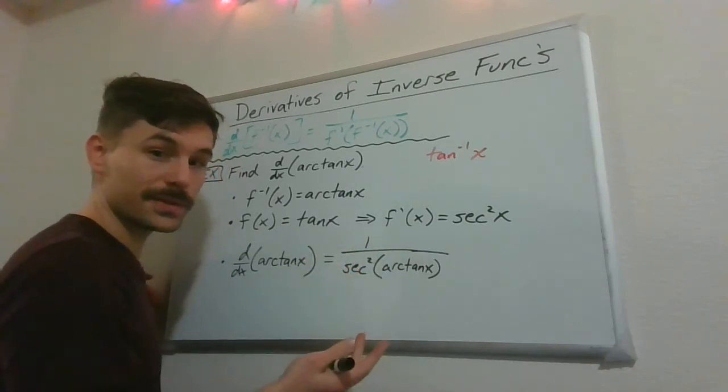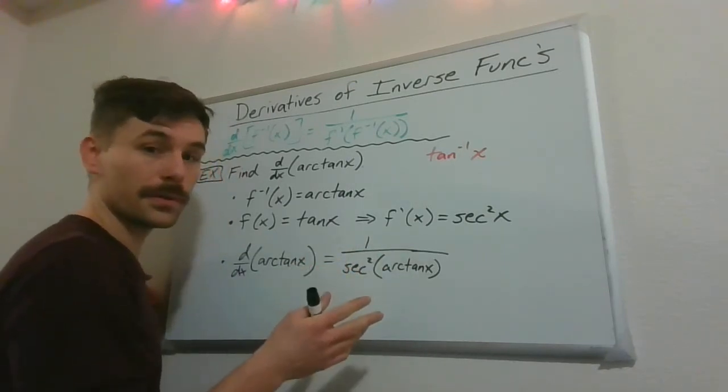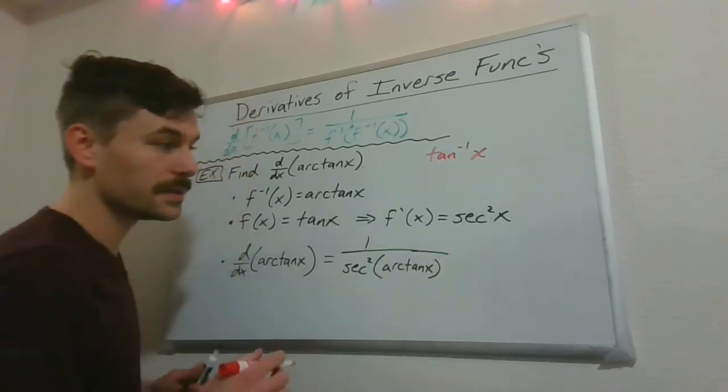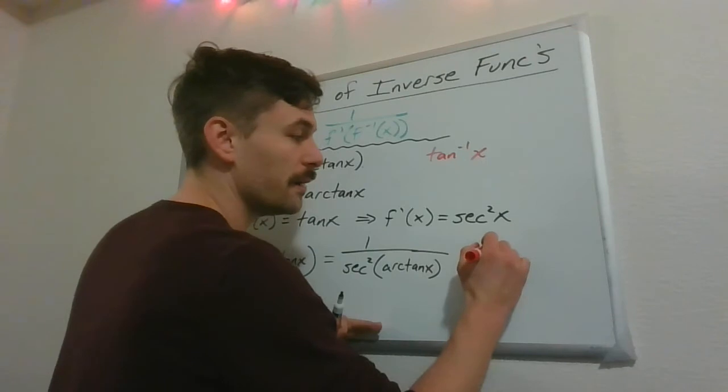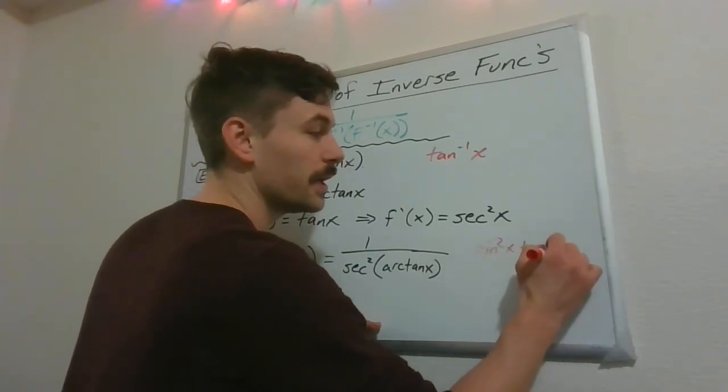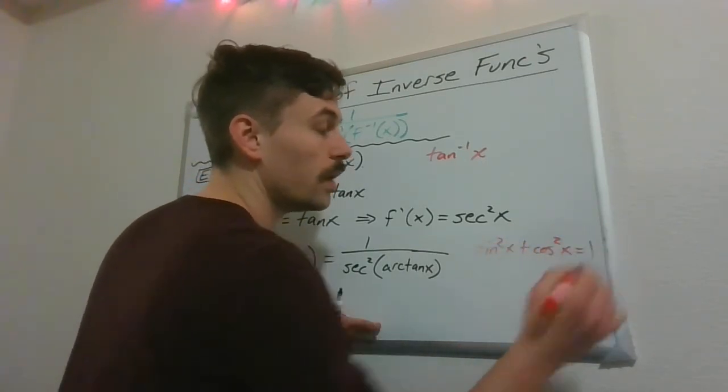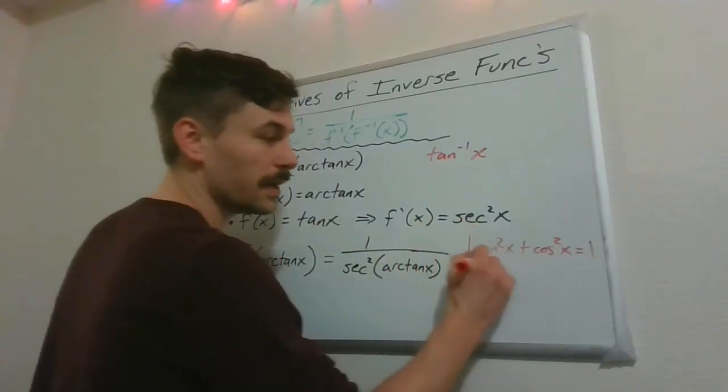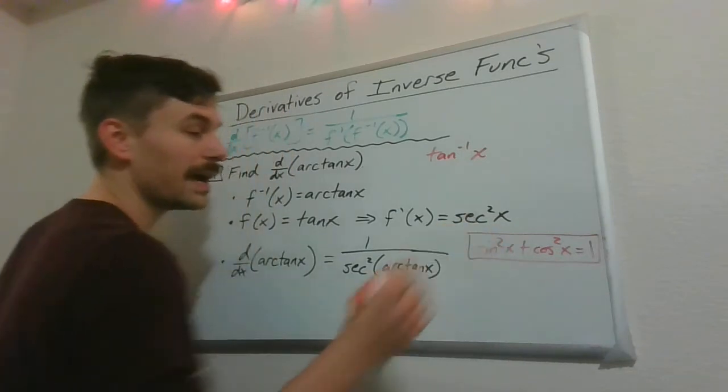This is a pretty ugly result, so we might want to manipulate it a little bit. So one thing to remember, this is a nice identity to have, is that sine squared x plus cosine squared x is 1. And we can manipulate that a little bit. This is our most important Pythagorean identity.